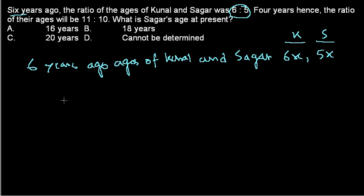Now once you get this value, then what we need to do is we know that the ratio of their age will be 11 is to 10 after four years, right? So this is six years ago, the age of Sagar and Kunal.